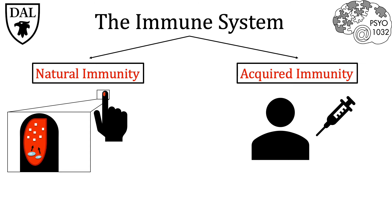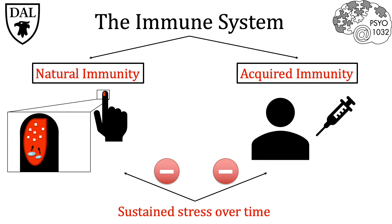What we see is that the physiological effects of stress, when sustained over time, will weaken both aspects of the immune system, where subsequently this immunosuppression will increase susceptibility to disease because of the body's diminished ability to fight invading antigens or damaged cells. With this in mind, we'll now go over some of the research that has allowed us to make these conclusions, linking both psychological and physical health.